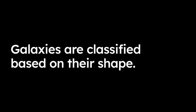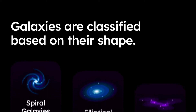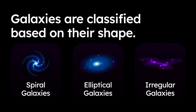We do classify galaxies based on what shape they take, and we have three main categories that we're going to focus on. These include spiral, elliptical, and irregular galaxies.